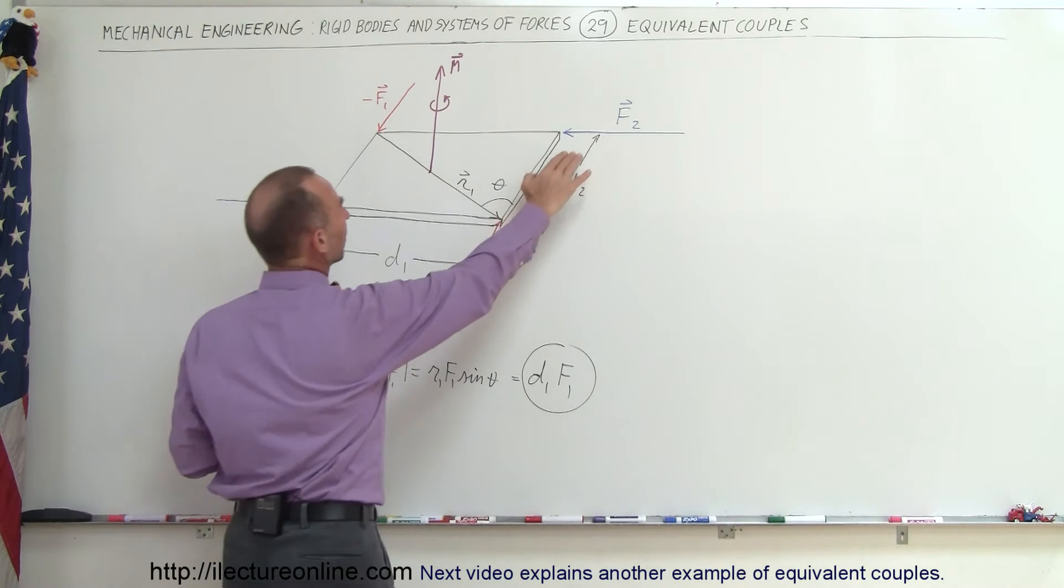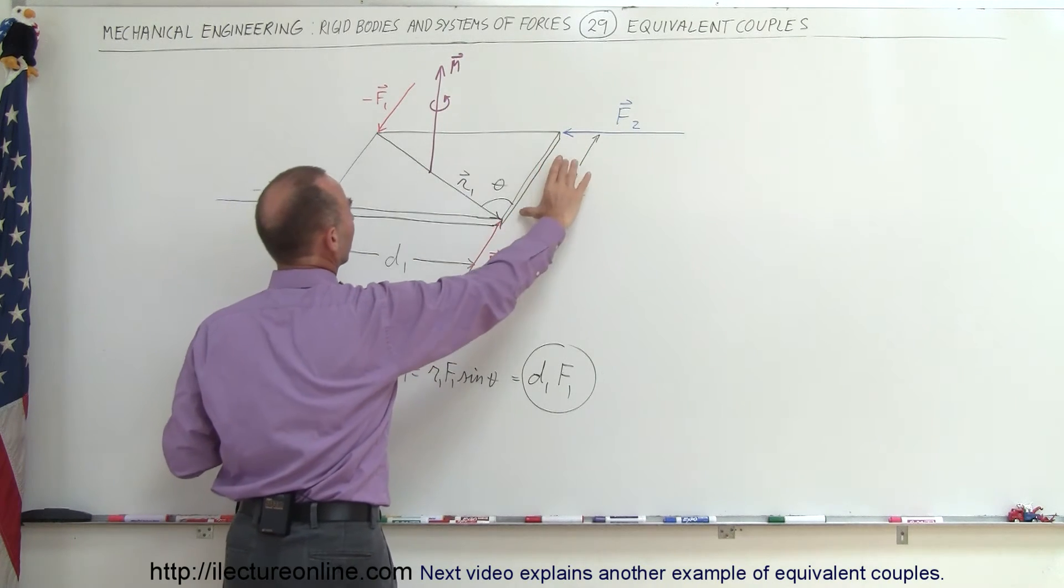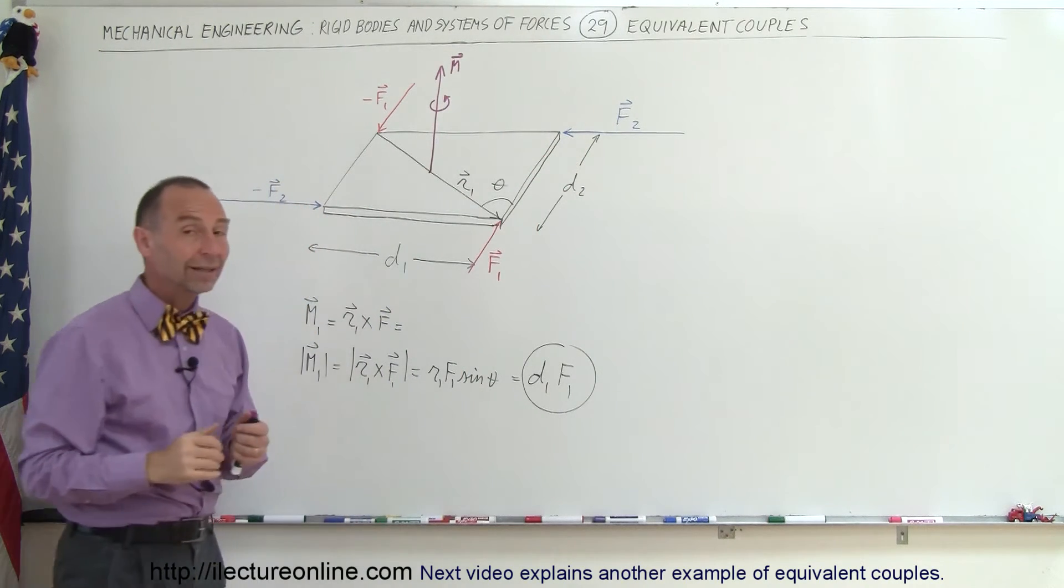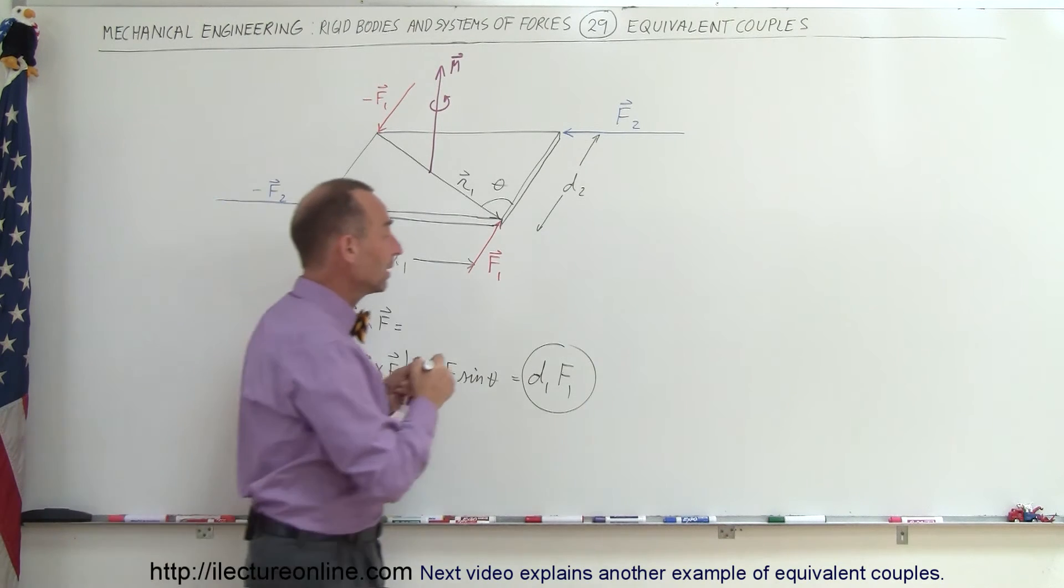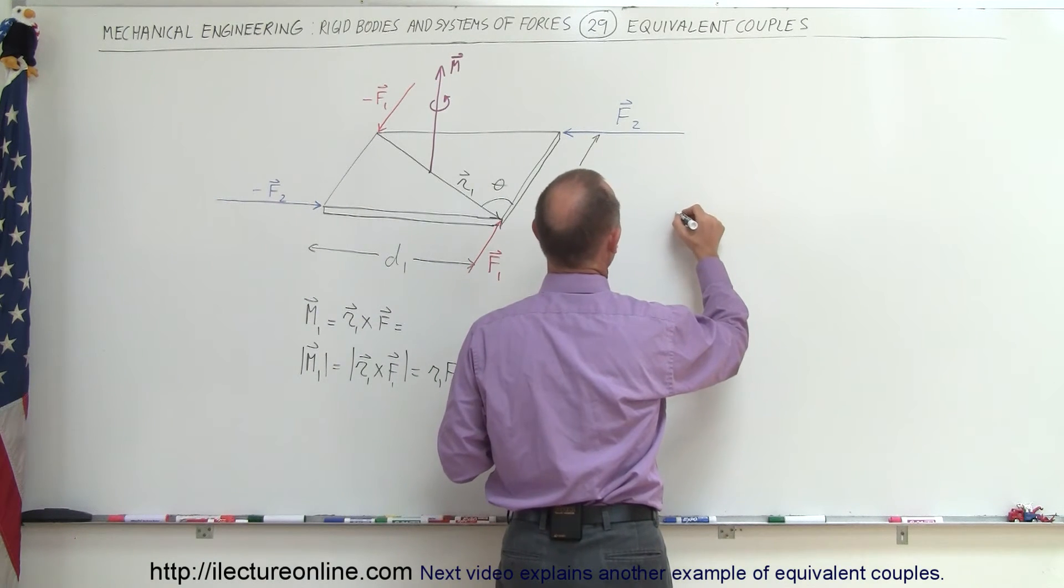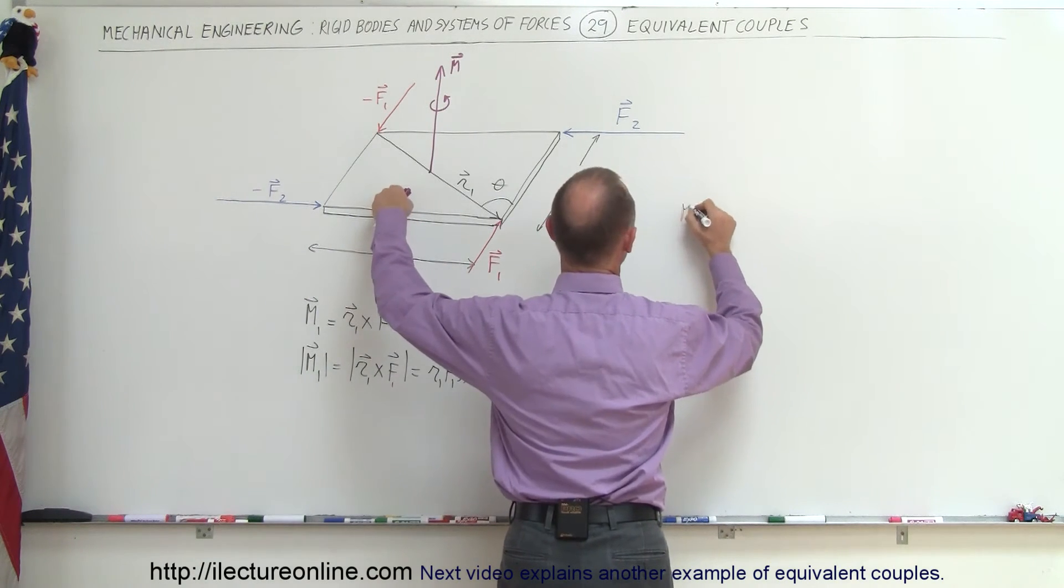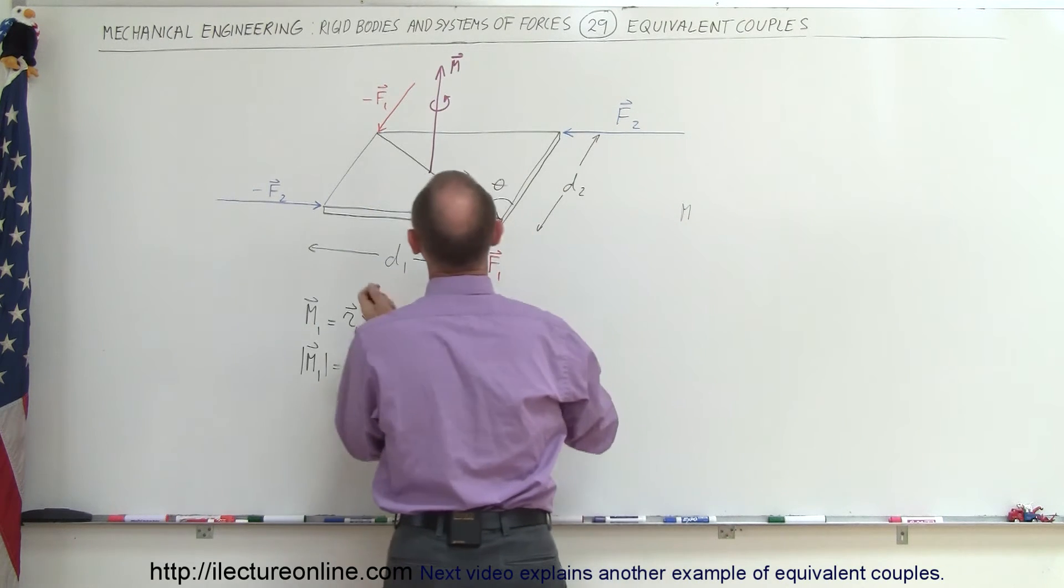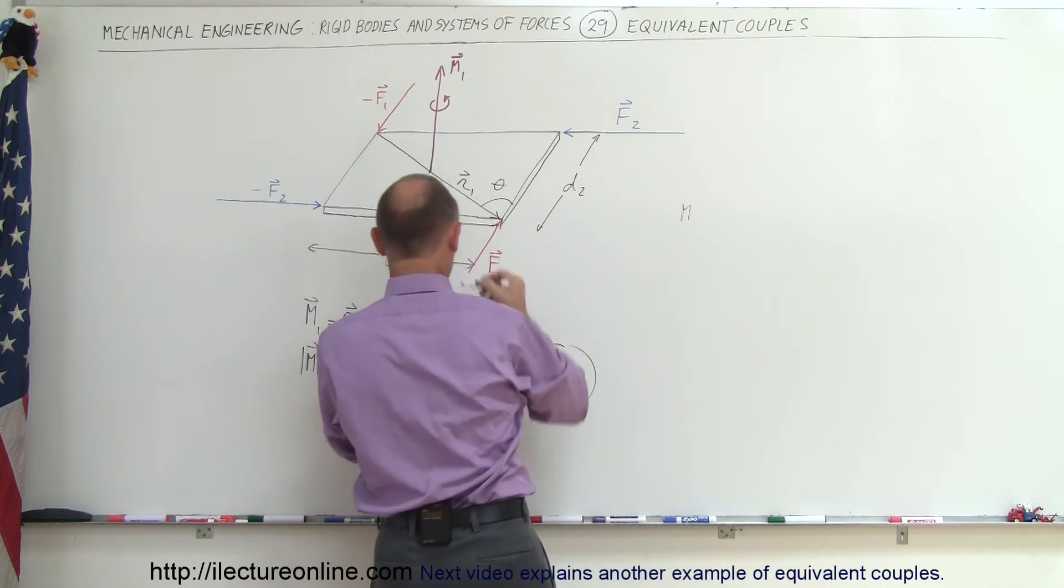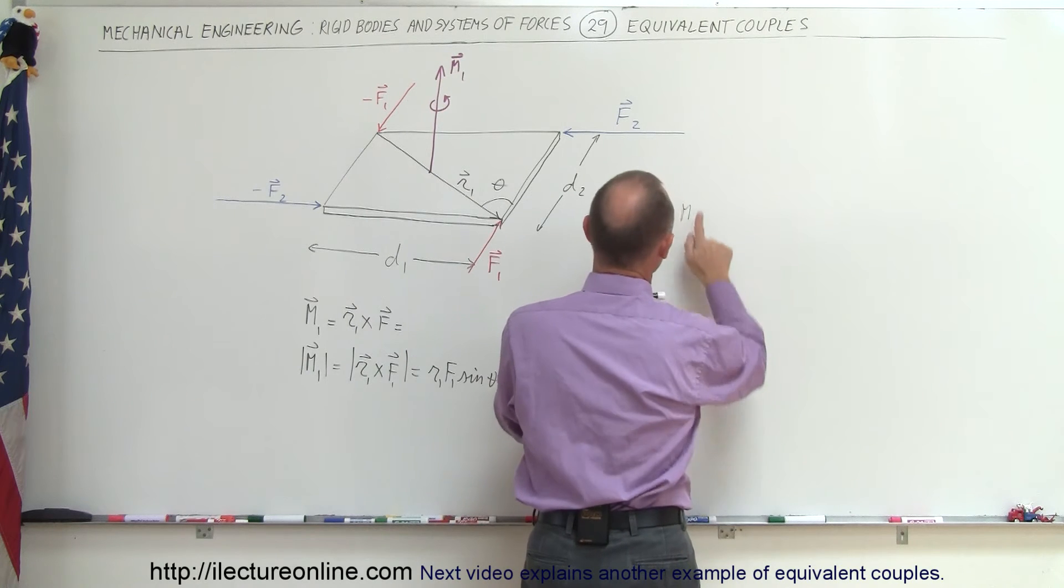Now, what about the second couple, F2, and they're separated by distance of D2. Well, if the product of those two, if we can say that moment two, let's call this moment one, if we now take moment two, we can say that moment two is equal to R2 multiplied times F2. So now let's draw a second vector, R2.